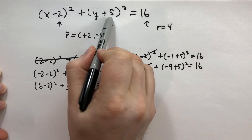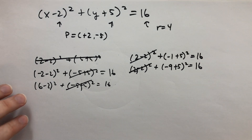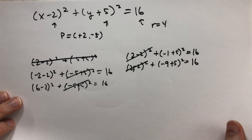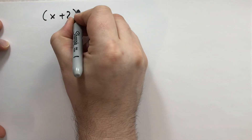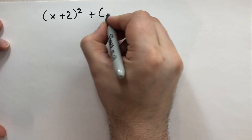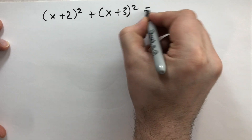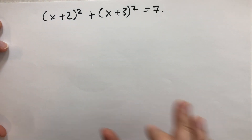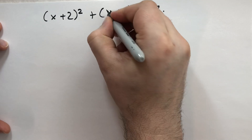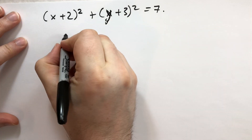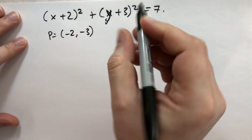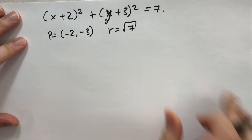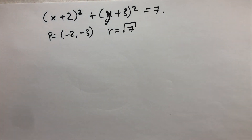Remember that the signs are inverted — you have to take the minus of those coordinates to find the center. Don't make the mistake I made. Now let's look at another equation: (x plus 2) squared plus (y plus 3) squared equals 7. There is a typo in the book — they meant to write y plus 3 squared. The center of this circle is (minus 2, minus 3) and the radius is the square root of 7. It's okay to have non-integer radii.